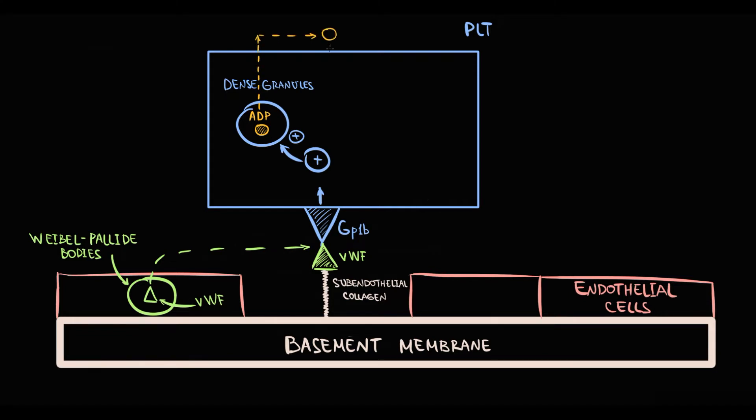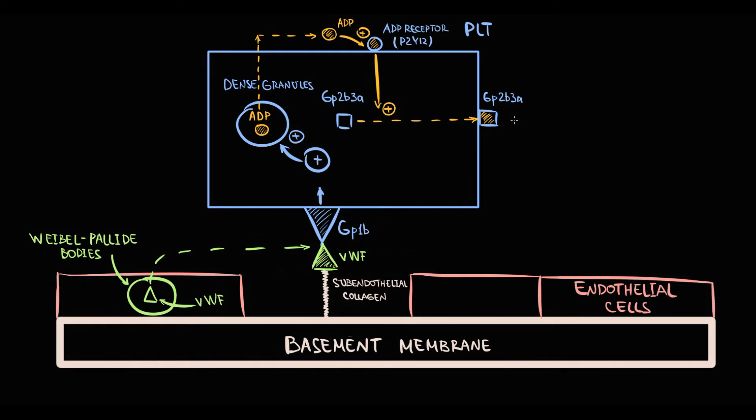ADP that is released into the blood acts on ADP receptors on platelets and activates them. Activation of ADP receptors forces platelets to transport GP2B3A receptor to the surface, where GP2B3A serves as a binding site for fibrinogen.